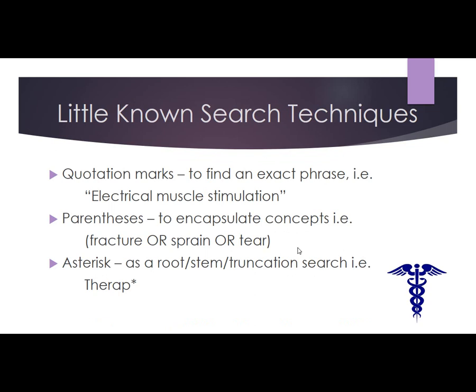When trying to include multiple Boolean operators, you can use parentheses to do so. Like shown here: open parentheses, fracture, or sprain, or tear, close parentheses. Root, stem, and truncation searching can be helpful, especially when you might be unsure of a spelling, or if you want to see what results contain 'THERAP' in them. So therapy, therapist, physical therapy, therapy animal, occupational therapy, and many more are returned when the THERAP* search is done.